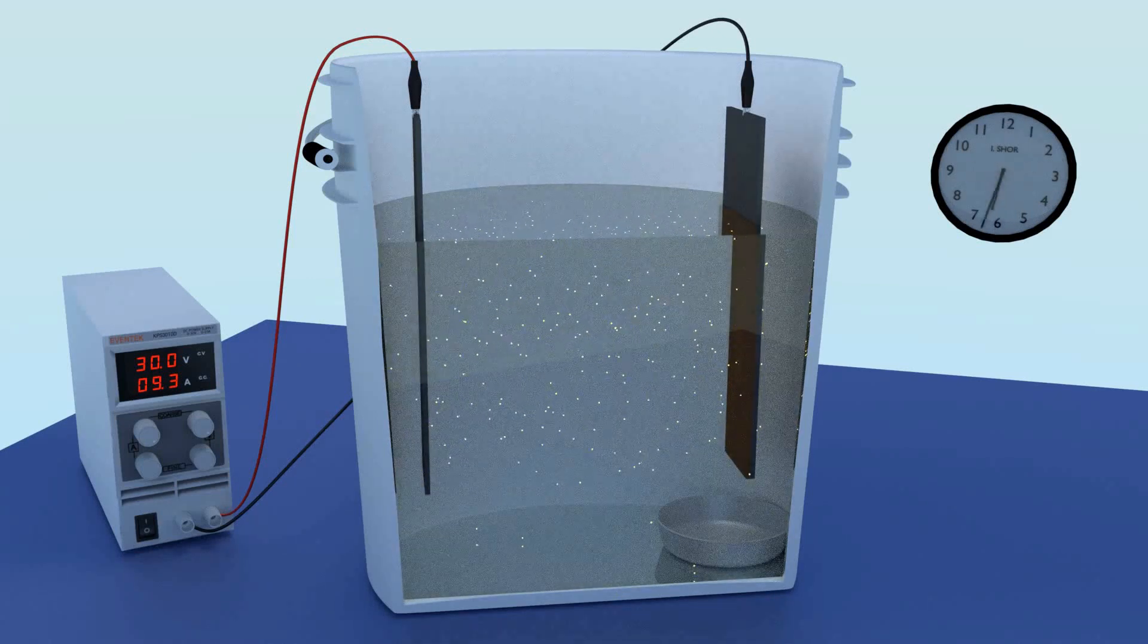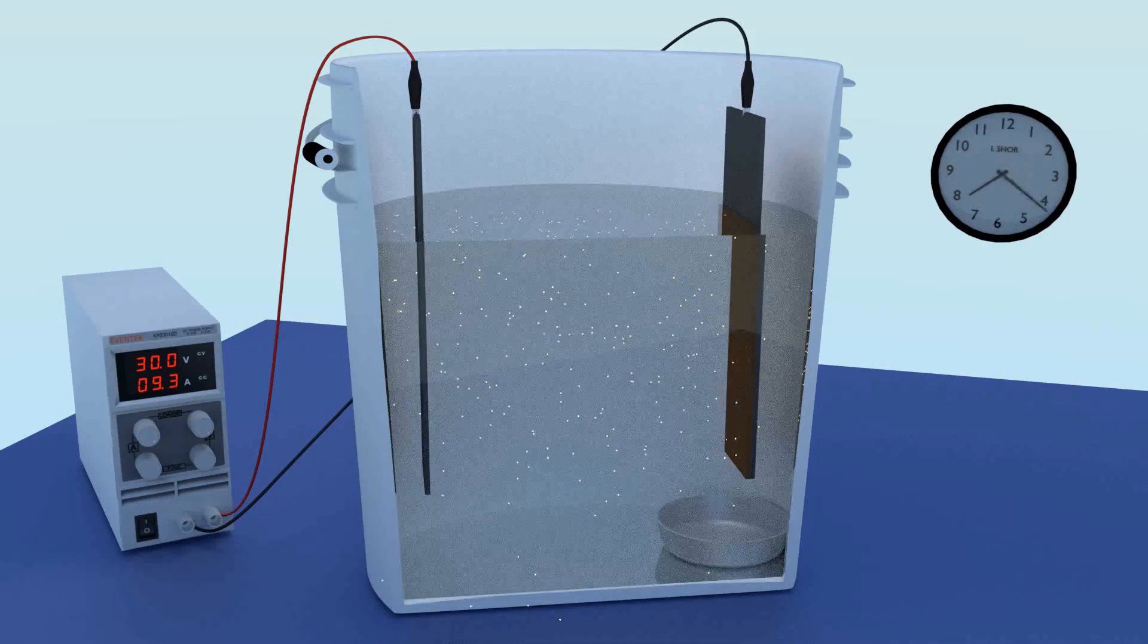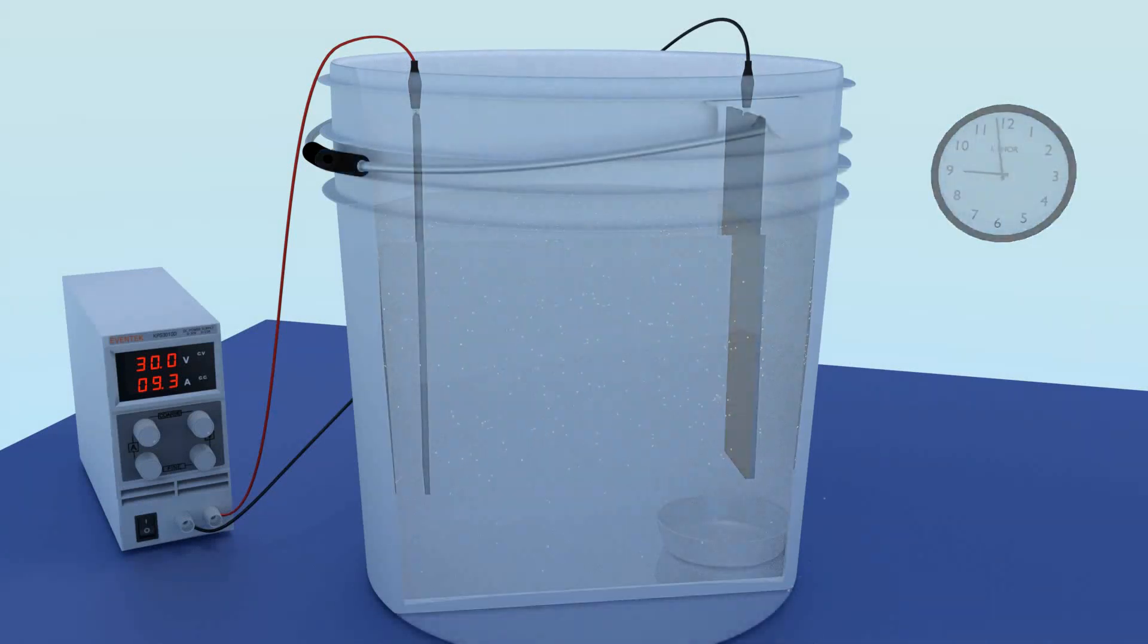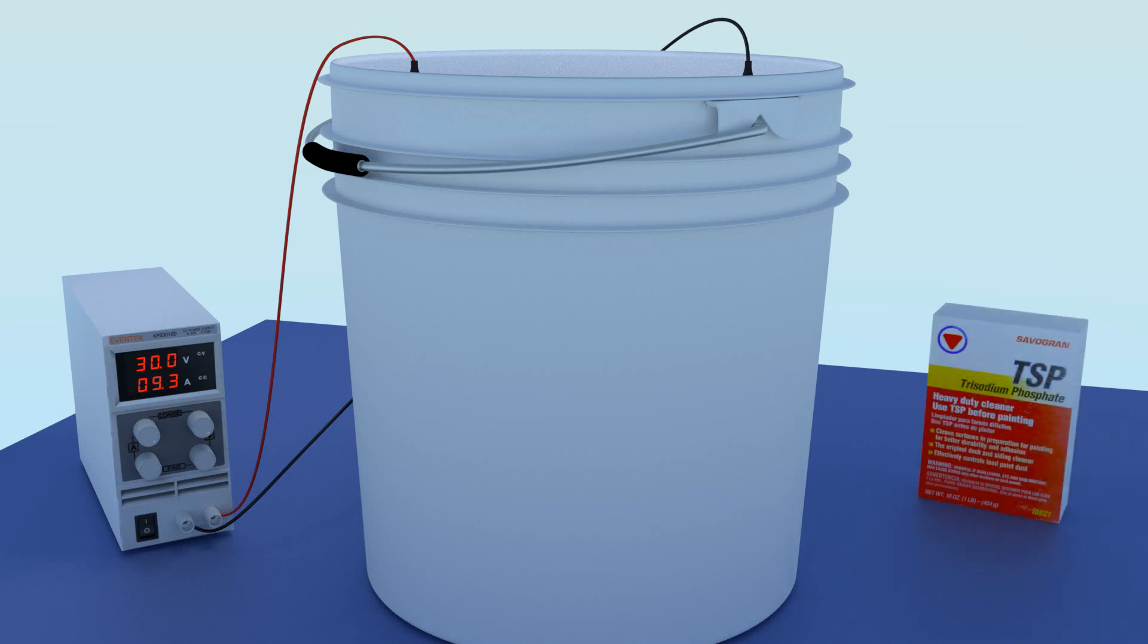You can also increase the amps by increasing the conductivity of the solution. This may be accomplished by adding TSP, trisodium phosphate, a powder generally sold in the laundry detergent section of supermarkets.